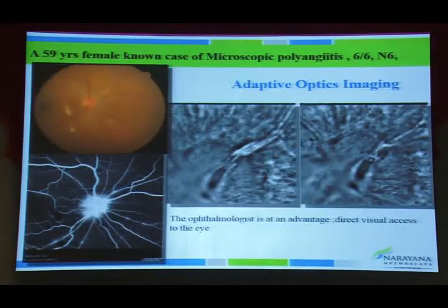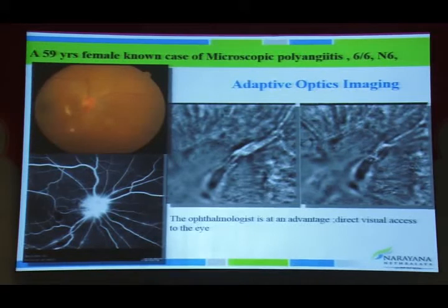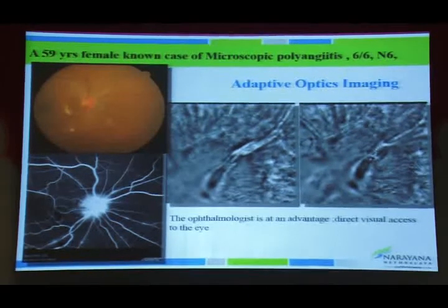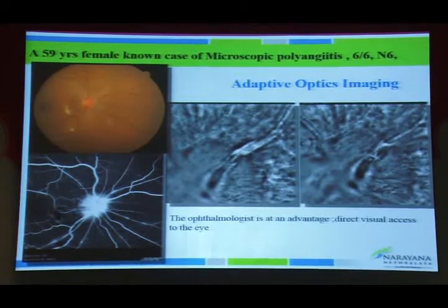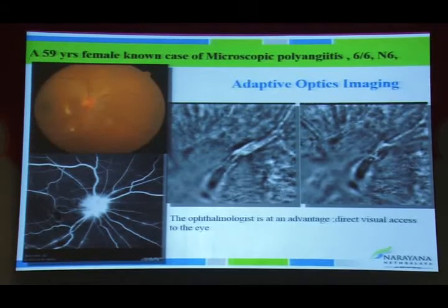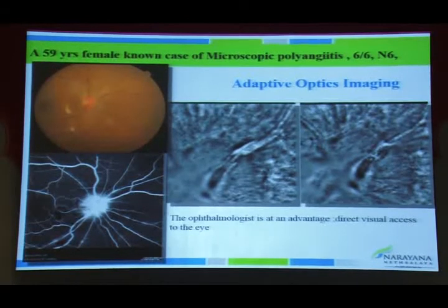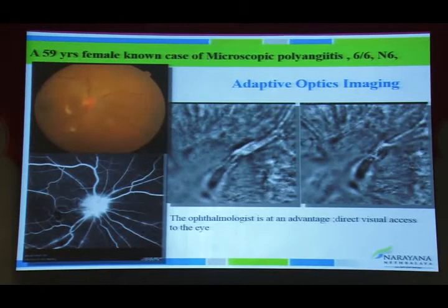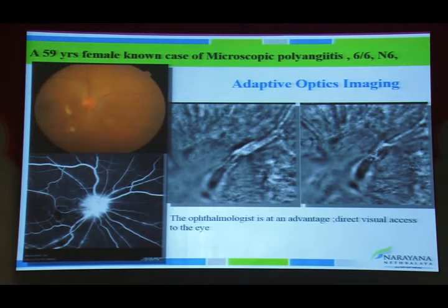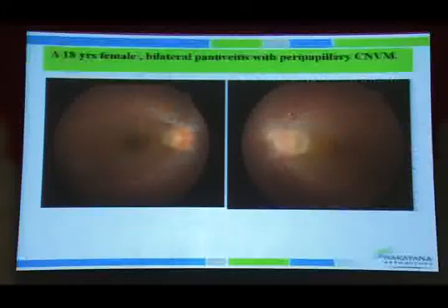Adaptive optics is a recent advance that can be used to study cone cell counts. It can also visualize parallel perivascular sheathing pattern of vasculitis in microscopic polyangiitis; following treatment, disappearance of the sheathing pattern was documented.